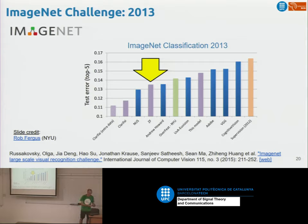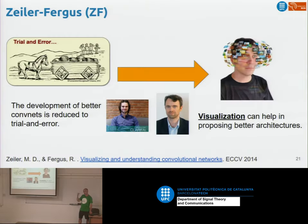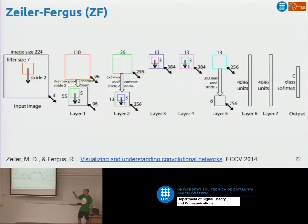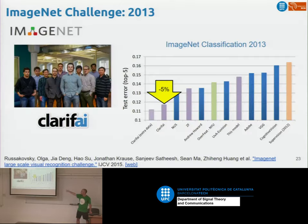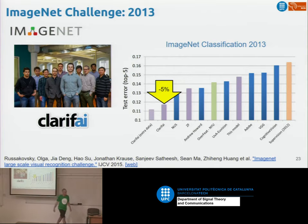In 2013, there was another work — called ZFNet or Clarify — where the authors visualized what was going on in the network, looked at the filters, changed some parameters, and improved performance. The winning entry from Clarify used convolutions and fully connected layers with nothing dramatically new structurally, but the visualization-based improvements made the difference.